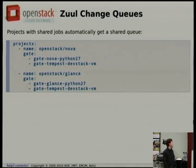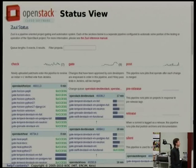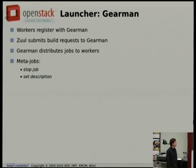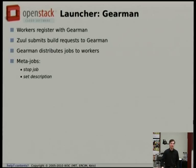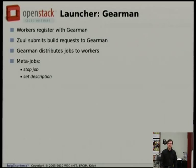Projects that share a job automatically get a shared change queue. For example, nova and glance share the gate-tempest-devstack-vm job, which means Zuul combines them into a shared queue. If they didn't share a job, their gates would be separate and a change to glance wouldn't have to wait for a change to nova to merge. Recently we've made Zuul not as tightly tied to Jenkins as it was originally — you can use Gearman, a fairly simple job distribution system with a lightweight protocol. Zuul submits requests to Gearman, and something on the other end picks up those jobs.